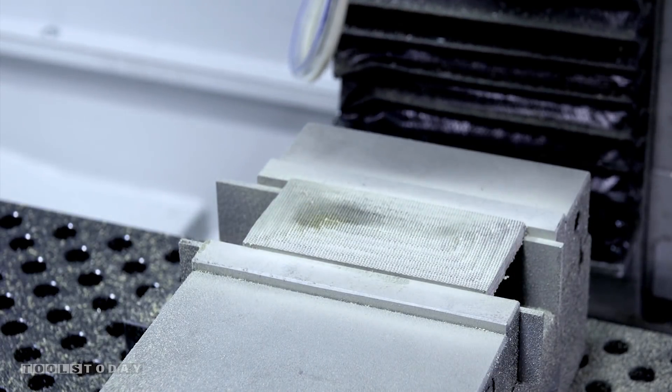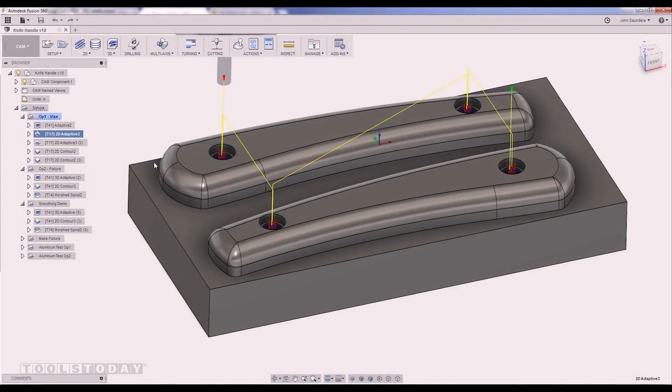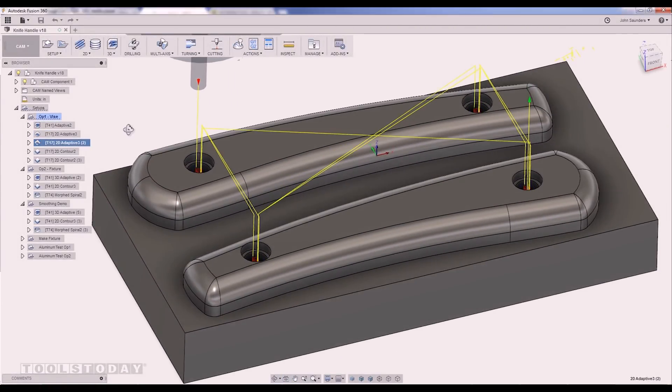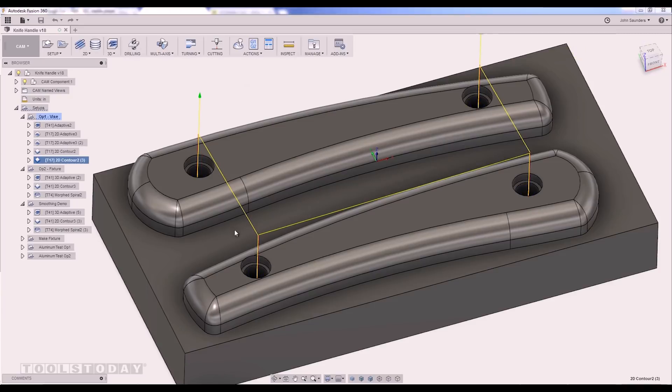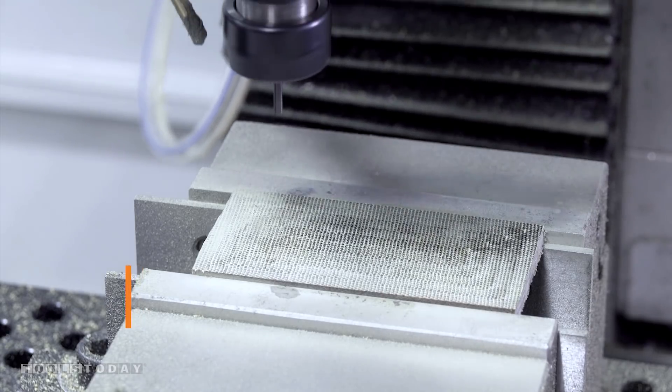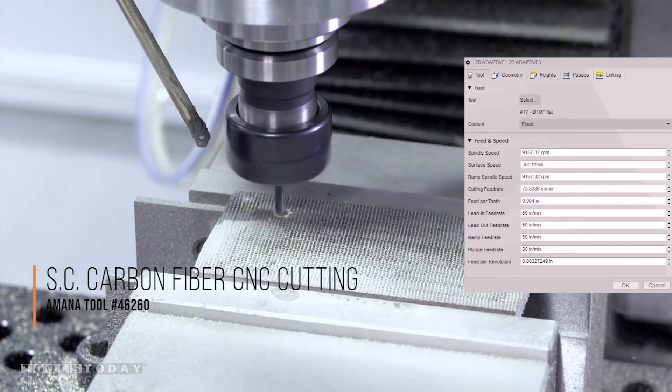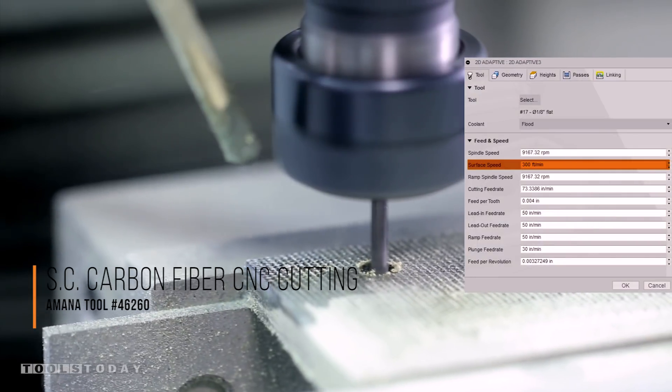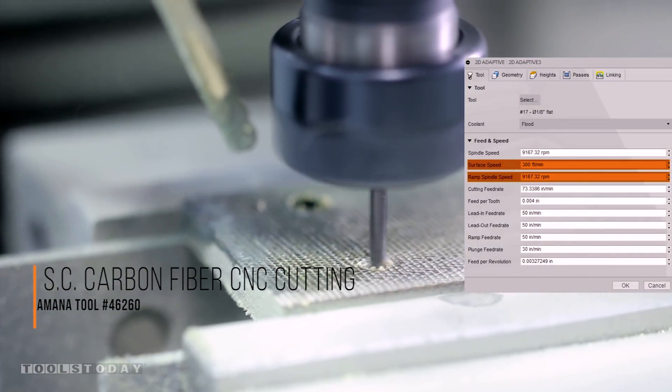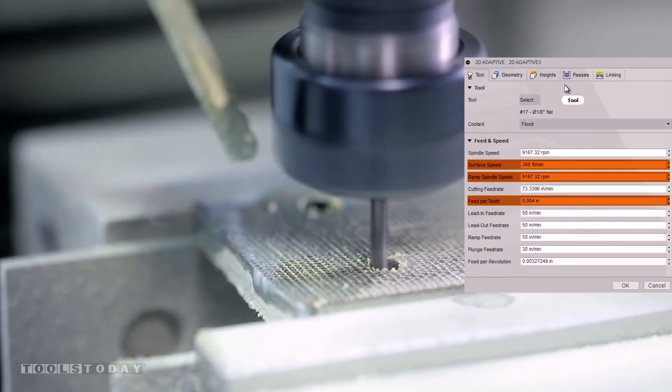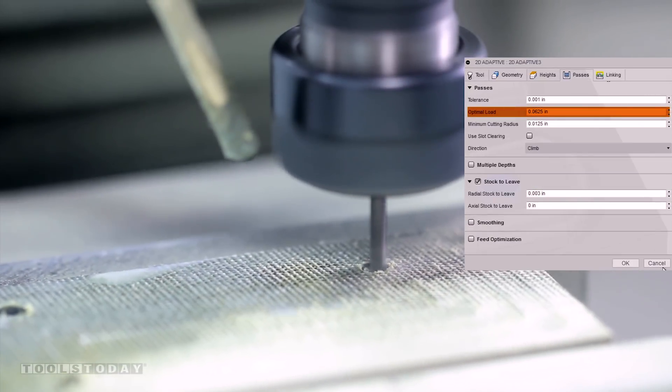All that's left now for op 1 is to use a 2D adaptive to adaptive out and then contour out these four screw holes. Max RPMs for me here was about 300 surface feed or 9200 RPMs. 4,000 per tooth. 0.0625 optimal load. This is pretty easy cutting.